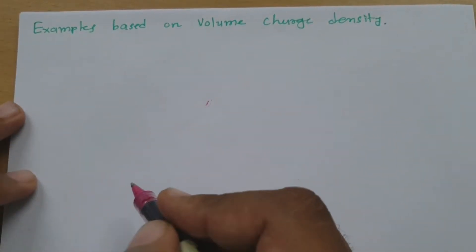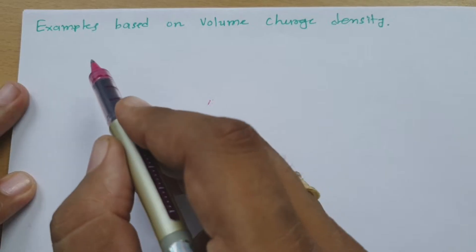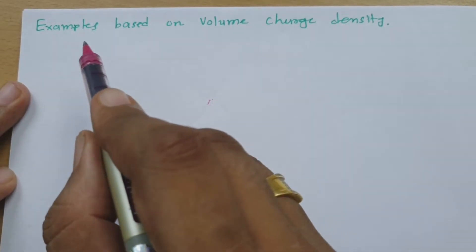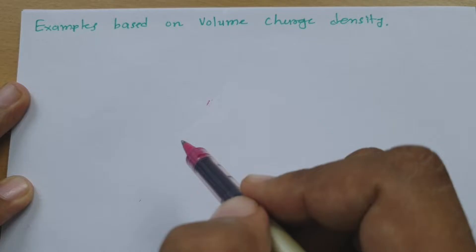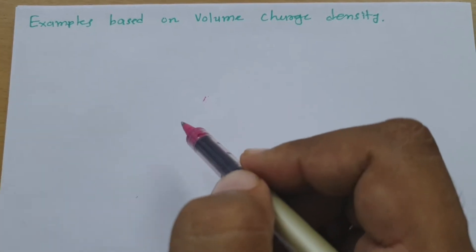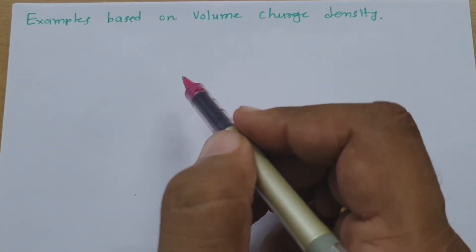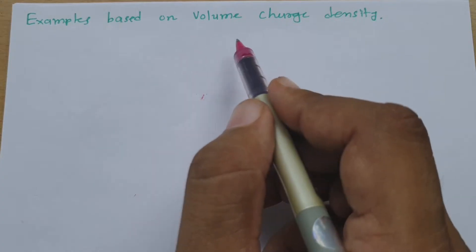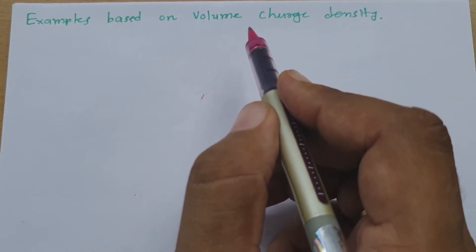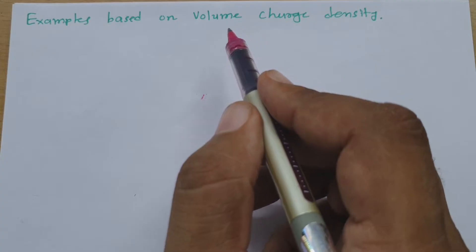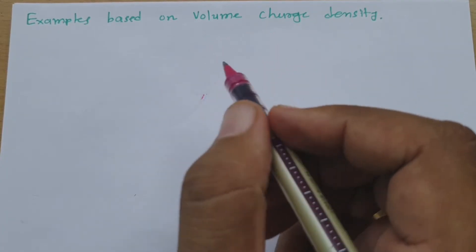Welcome to the Electromagnetics playlist. I, Professor Hitesh Dulakya, am going to explain examples based on volume charge density in this session. In my previous video, I explained surface charge density, volume charge density, and line charge density. Based on that session, in this session I'll solve examples based on volume charge density.